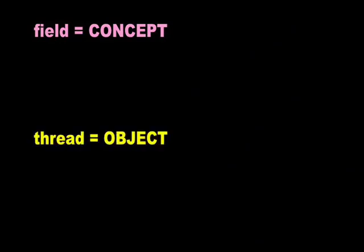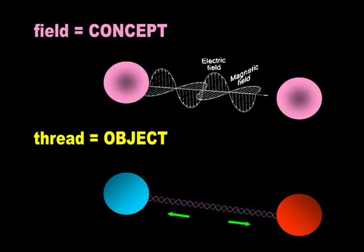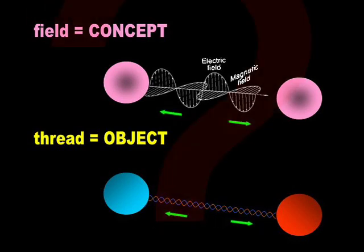Field is a concept. A thread is a physical object. A thread physically binds two atoms to each other. A concept such as field is like the concepts love and information. Concepts cannot pull two atoms together or perform any operations in the physical world.